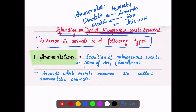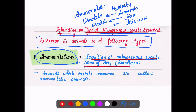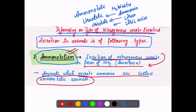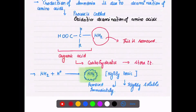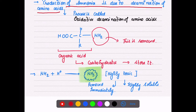So we have three types of excretion and three types of organisms. First, ammonotelism: excretion of nitrogenous waste in the form of ammonia. That type of excretion is known as ammonotelism, and those animals which excrete ammonia are known as ammonotelic animals. The production of ammonia is due to deamination of amino acids.